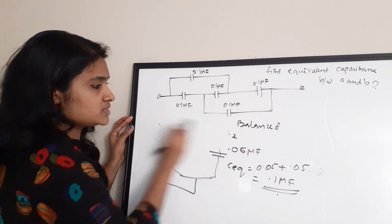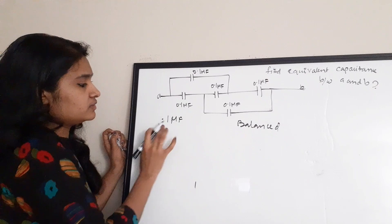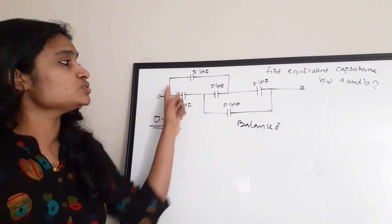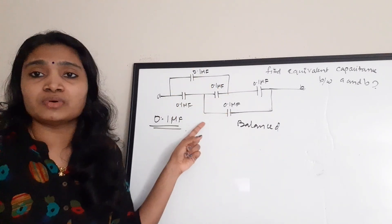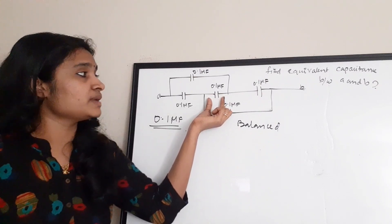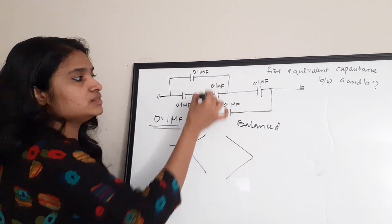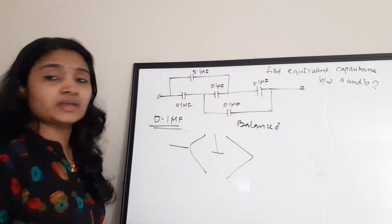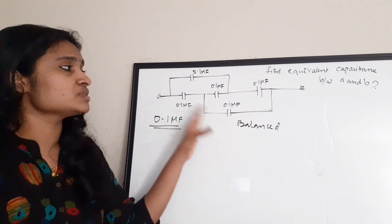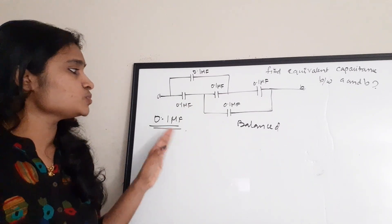The answer is that the equivalent capacitance is 0.1 microfarad. To solve this question quickly, you should recognize that this connection can be redrawn as a Wheatstone bridge with one capacitor as the central branch, and the remaining four forming the bridge arms. This allows you to identify the balanced bridge condition and solve faster rather than simplifying directly.